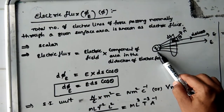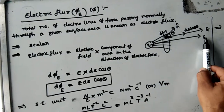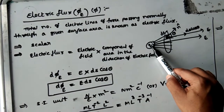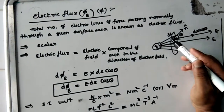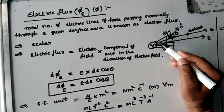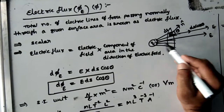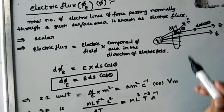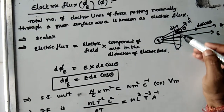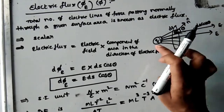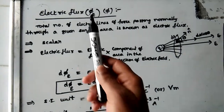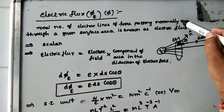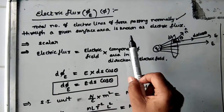Consider a point charge Q — it gives electric field away from it. If we consider a surface and place a unit positive test charge in this field, that charge may move in different directions. These lines represent the different directions in which a unit positive test charge can move. Through any given area, some lines of force are travelling. Electric flux is defined as the total number of electric lines of force passing normally — perpendicularly — to a given surface.